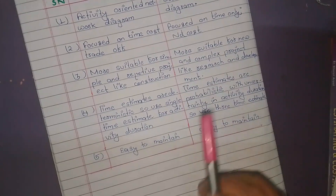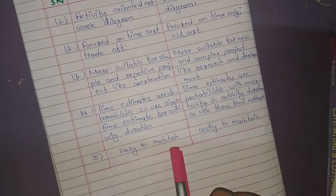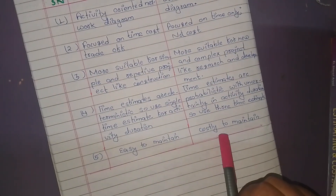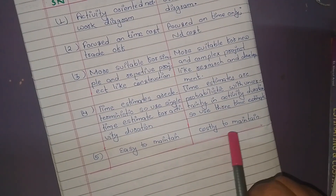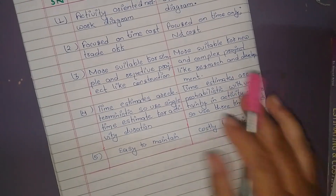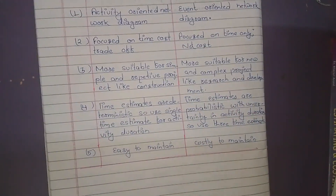At last, CPM is Easy to Maintain, whereas PERT is Costly to Maintain. Thank you.